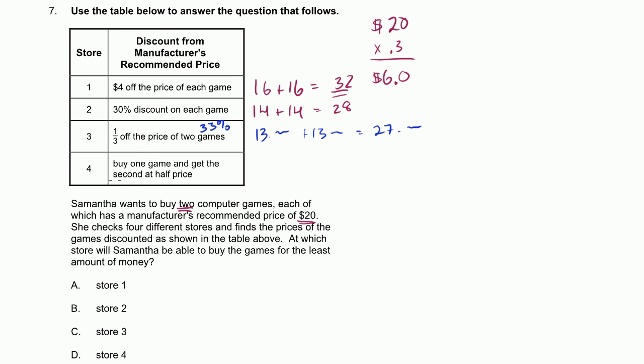And then the fourth one, buy one game and get the second at half price. So here, she's going to spend $20 on the first game. And then the second one is going to be half price. So she's going to spend a total of $30.